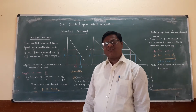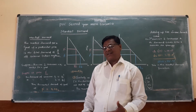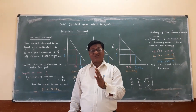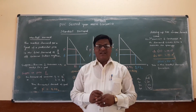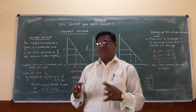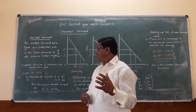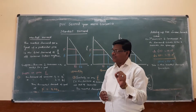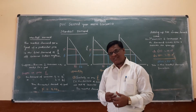In the market, where there are a number of consumers, we have to find out the market demand. How to find out the market demand? We find out market demand by adding all the consumers' demands — that is, by adding all the individuals' demands. The market demand for a good at a particular price is the total demand of all the consumers taken together. This is called the market demand.